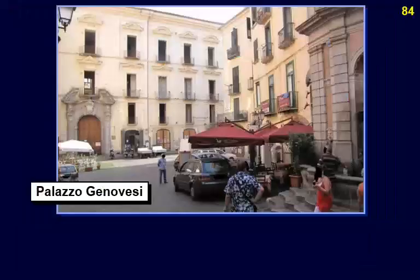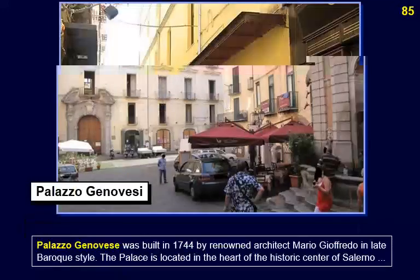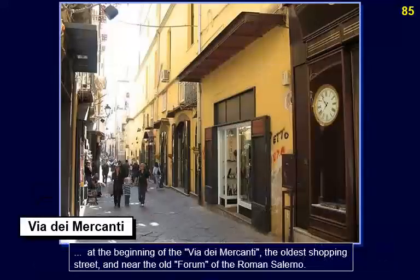Palazzo Genovese was built in 1744 by renowned architect Mario Gioffredo in late Baroque style. The palace is located in the heart of the historic center of Salerno at the beginning of the Via dei Mercanti, the oldest shopping street, and near the old forum of Roman Salerno.